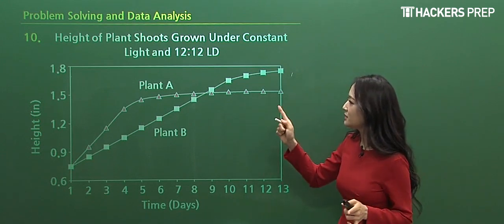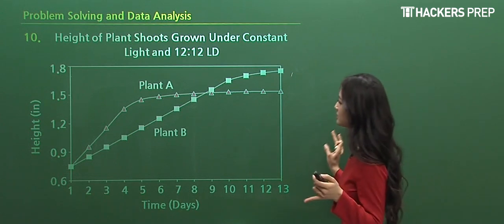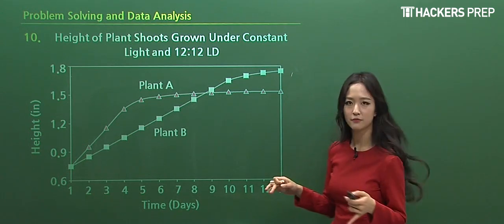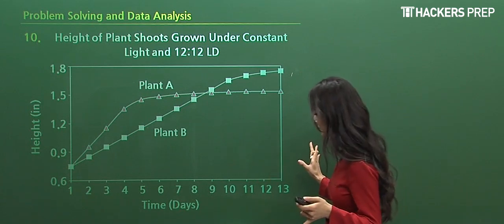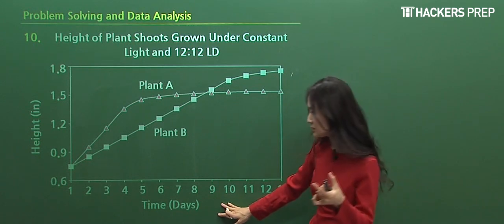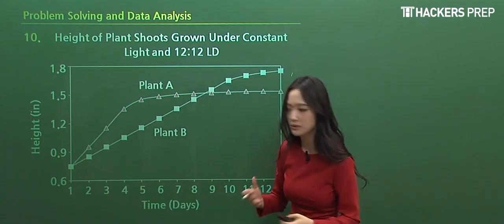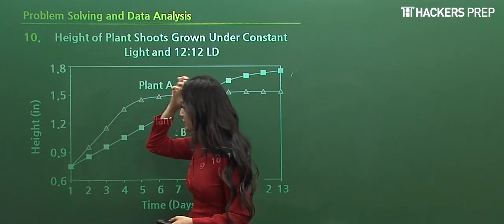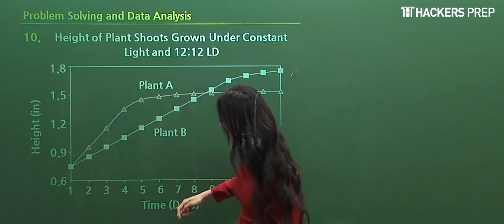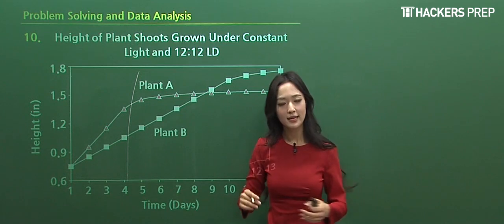So let's do number 10, our final one. Look at the title, it's telling us that we have the height of some plants, plant shoots, grown under constant light at 12:12 LD. I don't know what that means, but we have time in the x-axis given in terms of units of days, so we have a day passing by, two days, three days, four days, and so on and so forth. And the y-axis refers to the height given in inches.